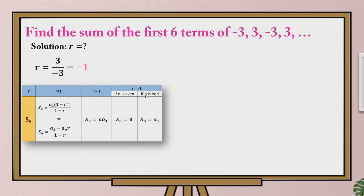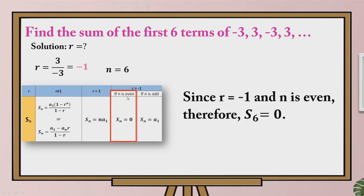There are two conditions. First, we need to know whether the number of terms is even or odd. Since in the problem we are finding the first 6 terms of this geometric sequence, our n is 6, and we know that 6 is an even number. So based on our condition, since r is equal to negative 1 and n is even, the sum of the first 6 terms of this geometric sequence is equal to 0.